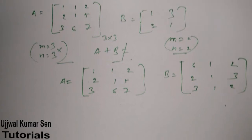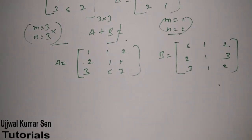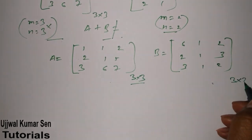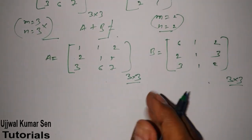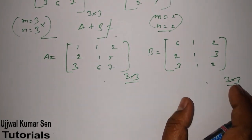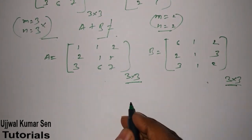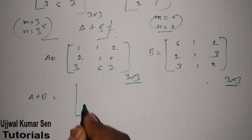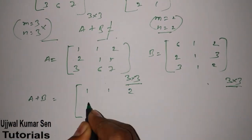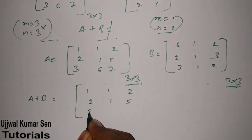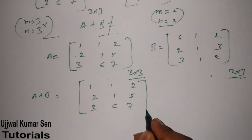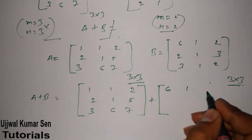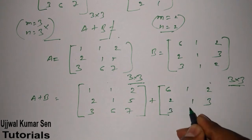Now we can do addition of these two matrices. Because in case of A we are having 3 by 3 matrix. This one is also 3 by 3 matrix. If both the matrices are of same type then only we can do addition. Now A plus B is equal to what we can write 1, 1, 2, 2, 1, 5, 3, 6, 7, okay. And this rule is applicable for all types of matrices. I mean for all orders of matrices, right. 3, 1, 2.